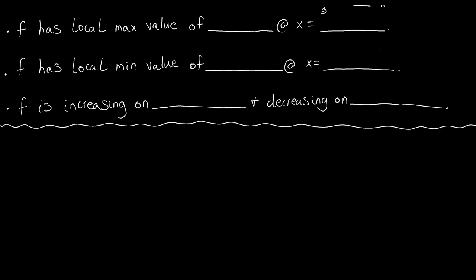So here, g equals x squared minus 3 over 25. Then g prime is the derivative with respect to x, so we take the power rule of each term and we get 2x — the constant evaluates to zero. And then h is e to the 5x.